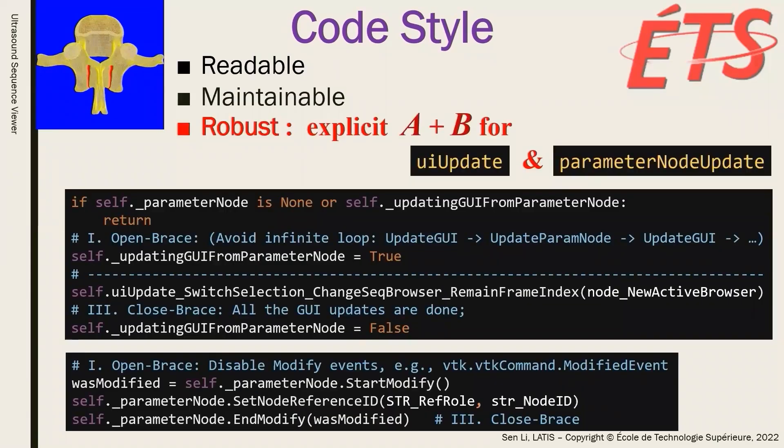The third rule to make our module robust is to explicitly define functions related to the update of user interface and the update of parameter node. Let me explain by starting from the update of user interface.